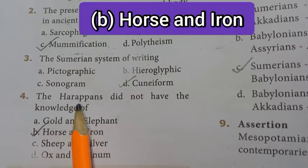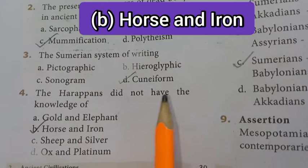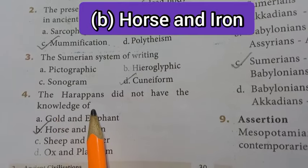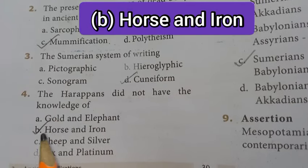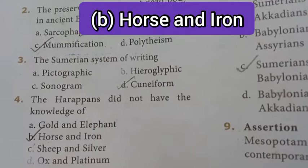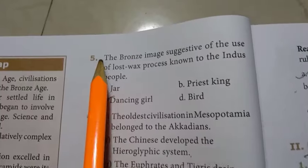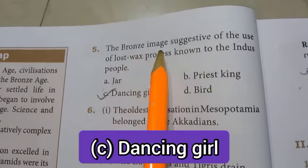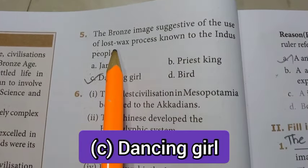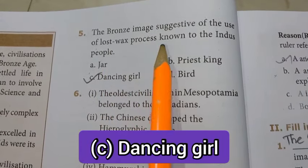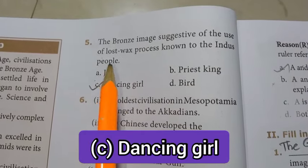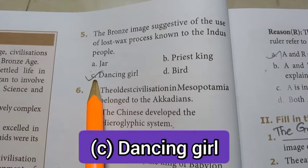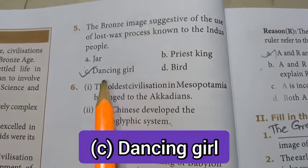Fourth question: the Harappans did not have the knowledge of horse and iron. B option is the right answer. Fifth question: the bronze image suggestive of the use of lost wax process known to the Indus people. Answer is C option: dancing girl.